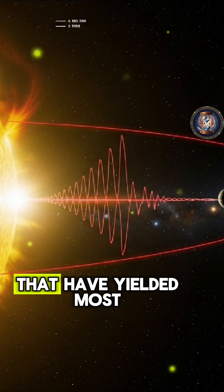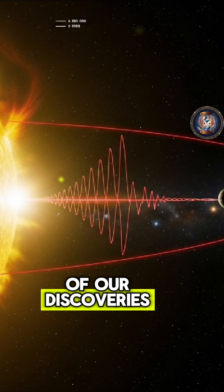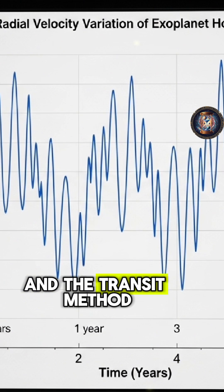The two main methods that have yielded most of our discoveries are the radial velocity method and the transit method.